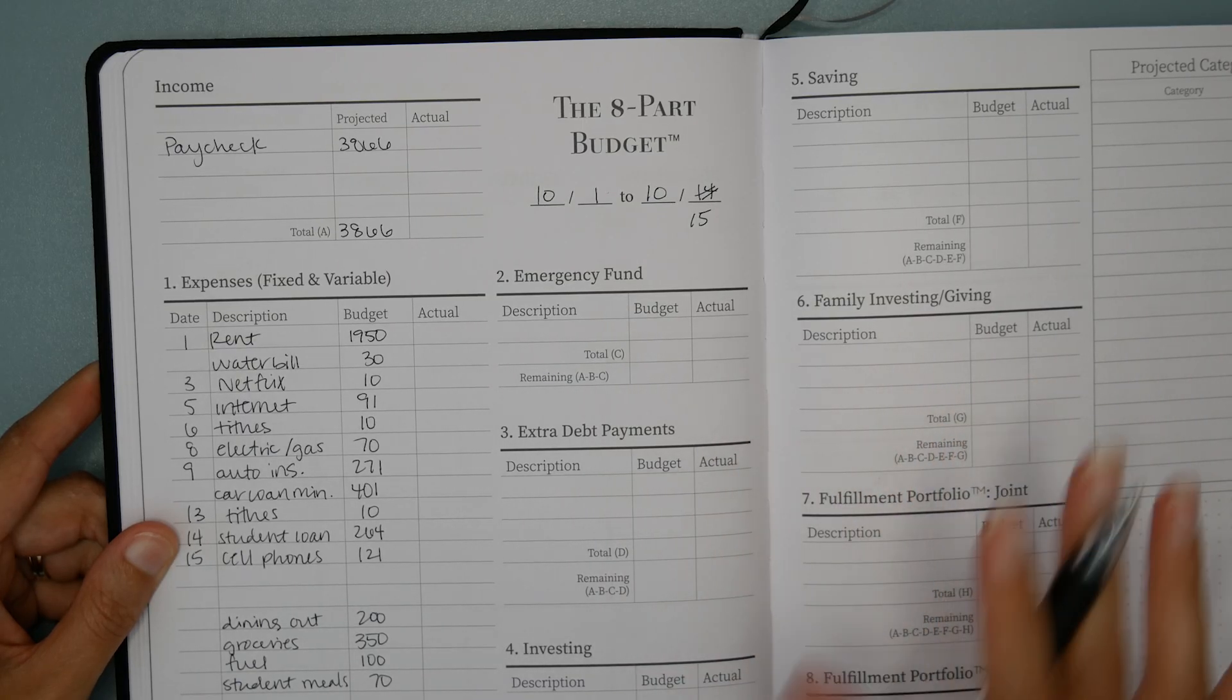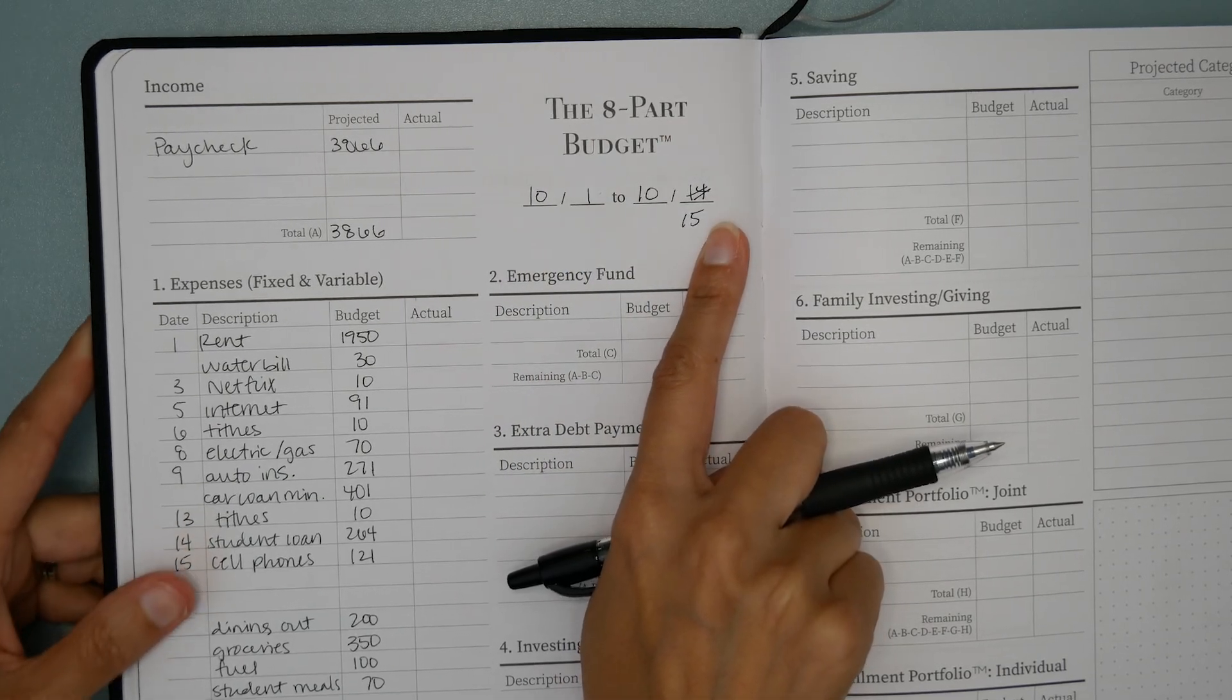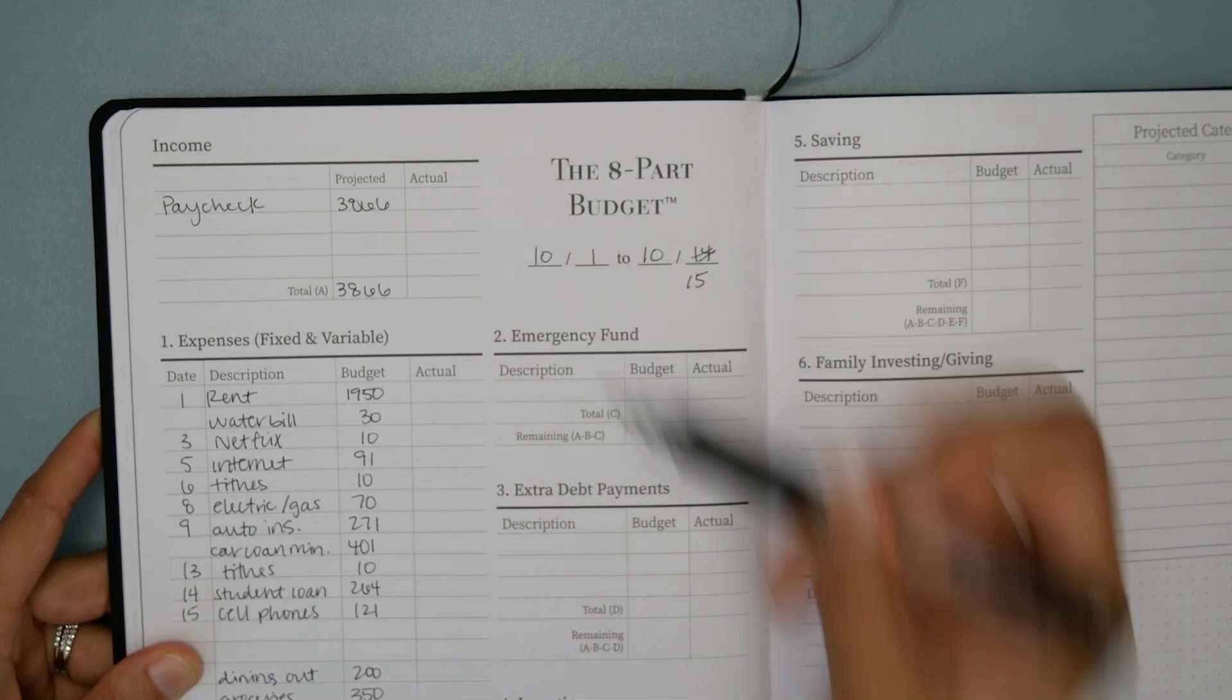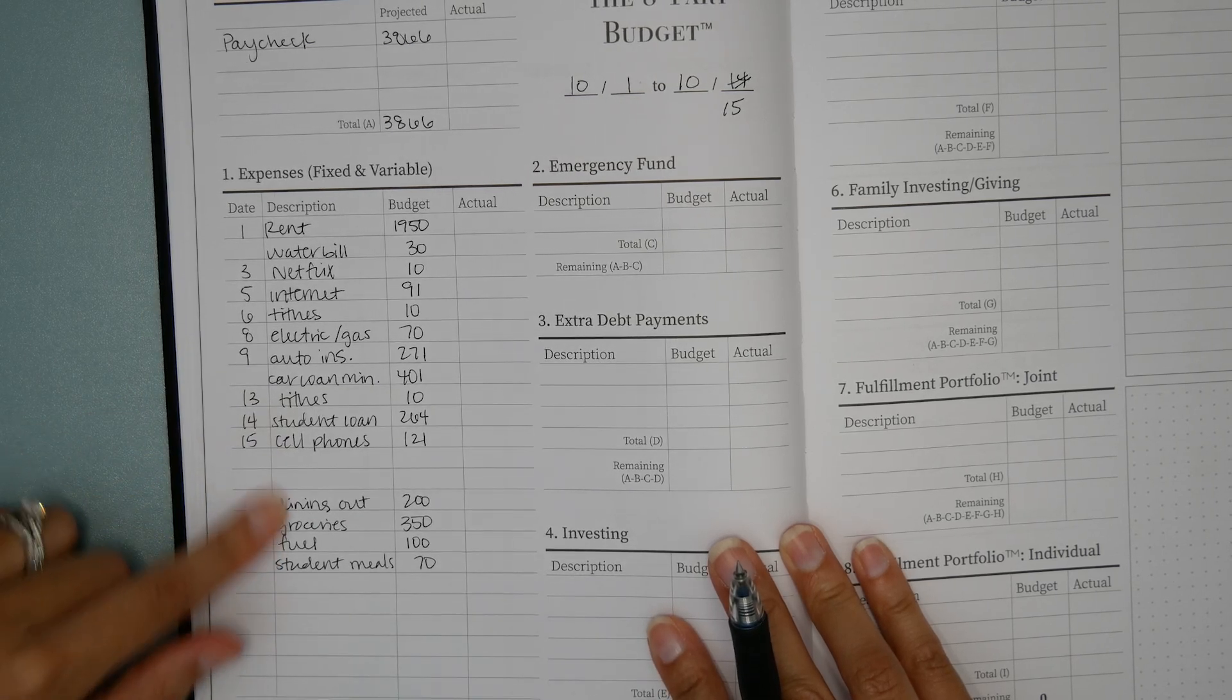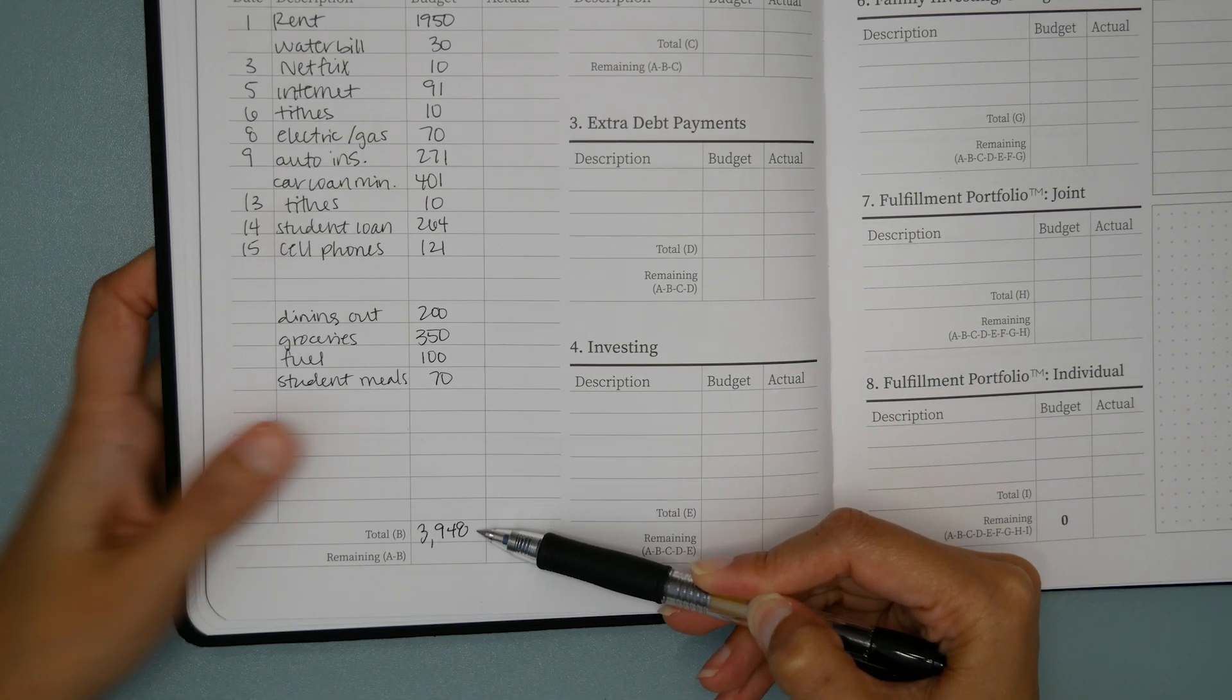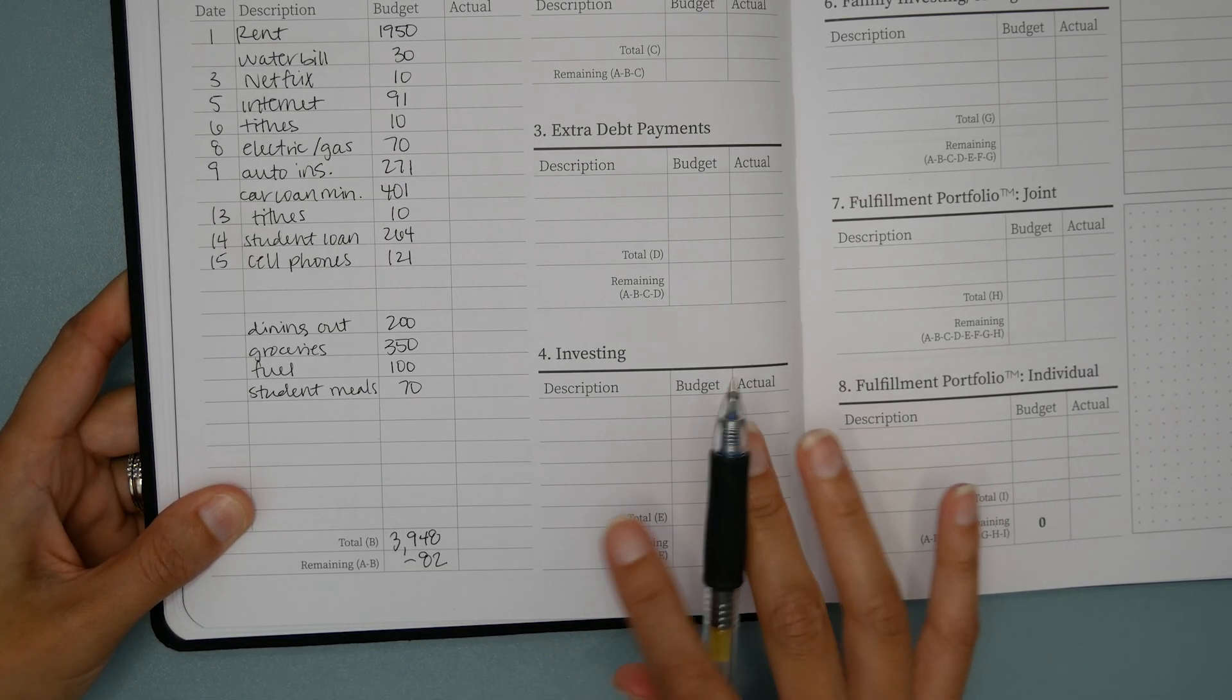She mentioned how she's always going into the red and she cannot wrap her head around it. I want to show you an example budget for October 1st through the 15th. This paycheck here in the income block is calculated with the $120 going towards her 401k, not the $300. The first block, we list all of her expenses that have a due date that fall between the 1st and the 15th. When we add all these expenses up, we end up with $3,948. If we take her paycheck and subtract this, we go into the red. We go to negative $82. So that explains what's going on in the first half of the month.